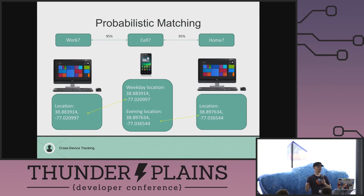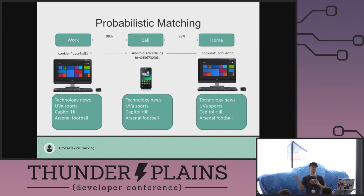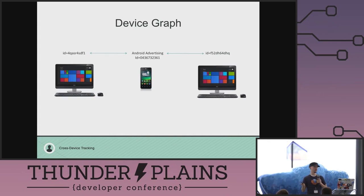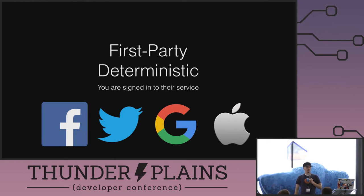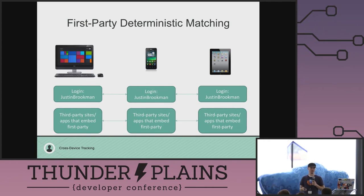If you look at GPS where they're connecting, you can say 'now we're 95% sure because this phone shares GPS with this computer during work days and this one during weekends.' Then you go into the browsing history of those cookies and say, 'now we know because they're really into tech news and Arsenal football — these three devices are all the same person.' They're creating a device graph. First-party deterministic matching is when you're signed into a service on multiple devices — they just know that you are. Google knows you're signed in on your Mac and your phone.